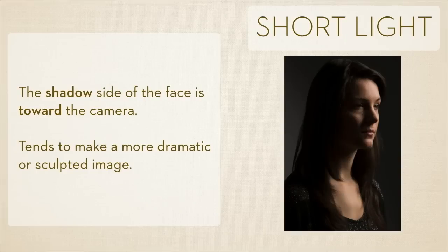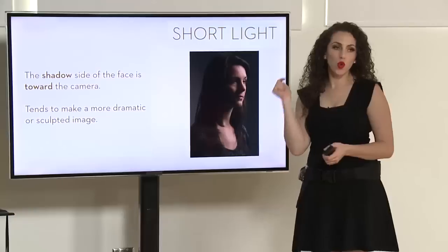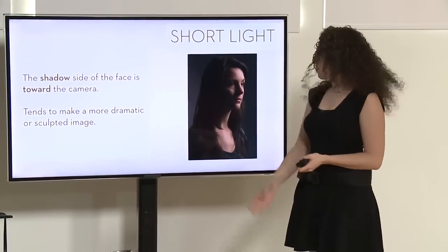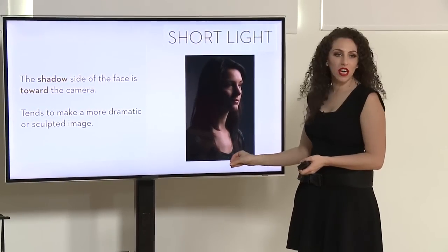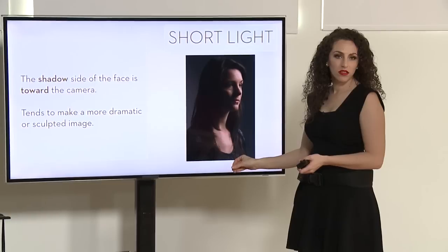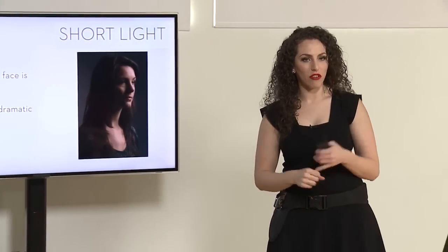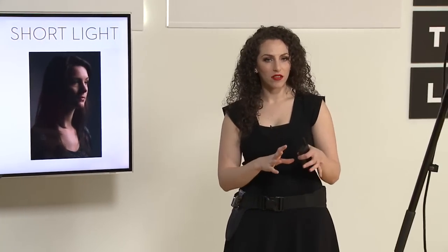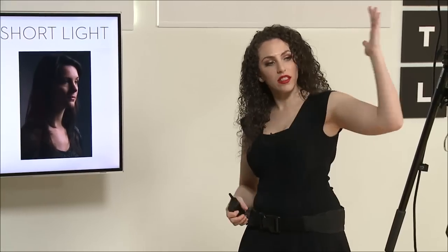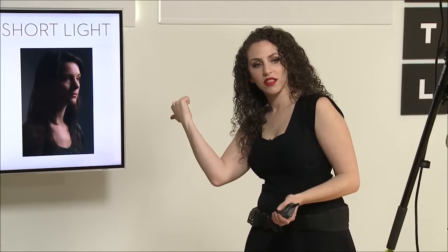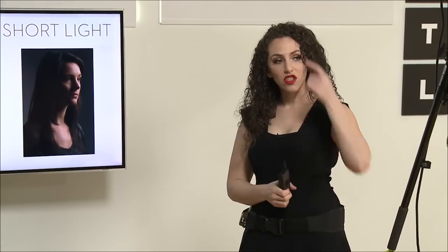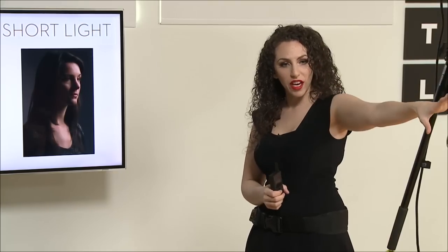Short light is the opposite. The shadows are coming towards the camera, and it makes someone's face look much more narrow. This has to do with where the shadows are falling. Broad light — if I'm the subject — the shadows are falling this way. In short light, the shadows would be towards the camera.